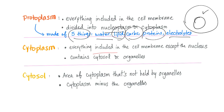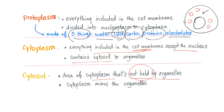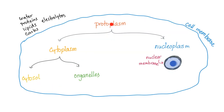Cytoplasm is everything included in the cell membrane except for the nucleus. It contains the cytosol and organelles — tiny organelles. Cytosol is the area of the cytoplasm that is not held by organelles; cytoplasm minus organelles equals cytosol. So the protoplasm is cytoplasm plus nucleoplasm. Cytoplasm is cytosol plus organelles. The protoplasm is made of water, electrolytes, proteins, lipids, and carbohydrates.